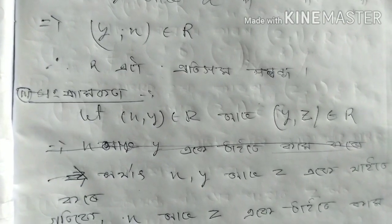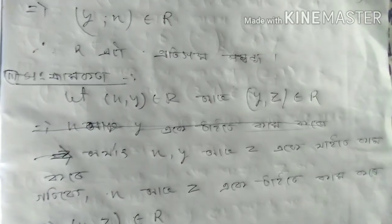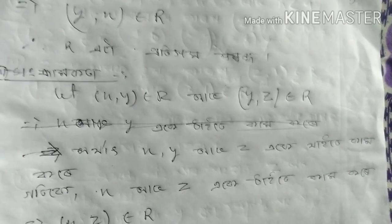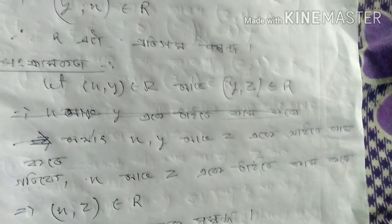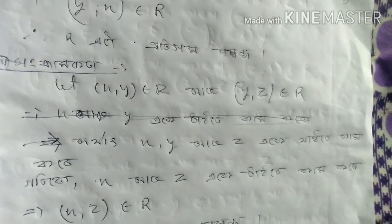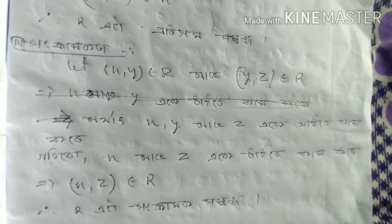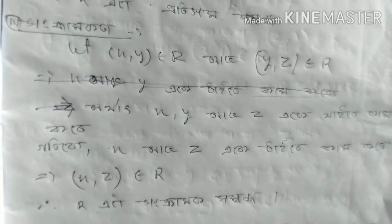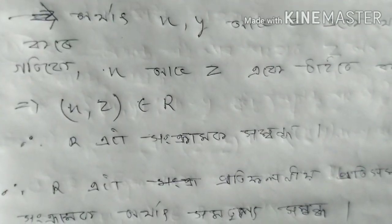Let x, y belong to R, and y, z belong to R. Or that x and y, x, y, r, z — obviously x, r, z belong to R. Therefore R is transitive. I think this is the same as C.